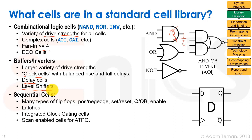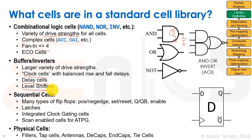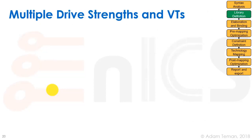Sequential cells include many different types of flip-flops — positive and negative edge triggered, with set, reset, Q and Q-bar outputs, with or without enable — as well as latches, integrated clock gating cells, and scan-enabled cells for automatic test pattern generation. Physical cells include fillers, tap cells, antennas, decaps, and tie cells. These physical cells don't change the boolean functionality of the circuit; they serve structural and physical design purposes.